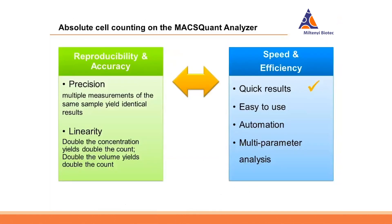Looking back at our list of desired goals: automation ensures quick results and ease of use. The whole thing is in a multiparametric environment — flow cytometry can not only enumerate cells but also phenotype them at the same time. What we are mainly interested in, and what is really the difficult part, is precision and linearity, which we are now going to discuss in more detail.